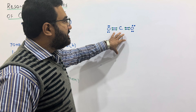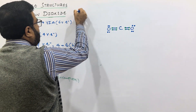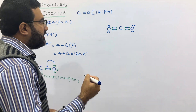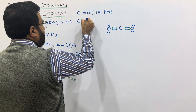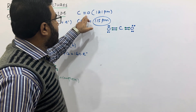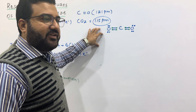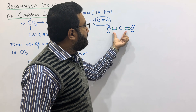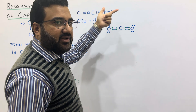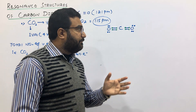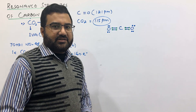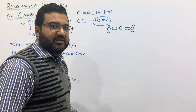Now the question is: is this the actual structure of CO2? The carbon double bond oxygen bond length is normally 121 picometers. But when we calculate the bond length of the carbon-oxygen bonds in CO2, it is 115 picometers. So this single structure is not enough to explain this bond length — the actual bond length does not match. It means we need more structures to approach the actual structure of CO2. That process in which more Lewis structures are proposed is called resonance.